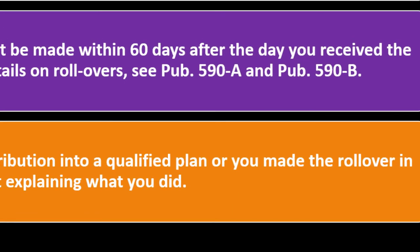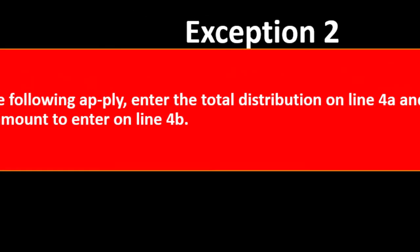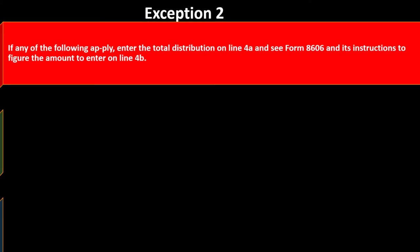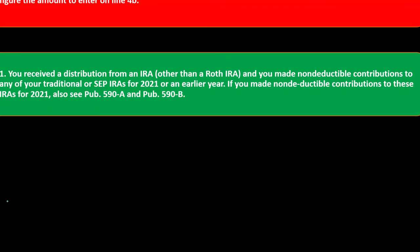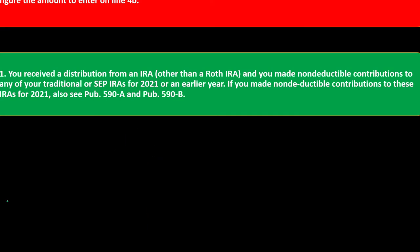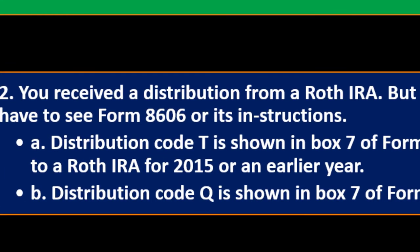You could have a cutoff situation where you pulled the money out in 2021 and put it back within 60 days, but the rollover wasn't completed until 2022. In 2021 you had the distribution but hadn't put it back in yet. Exception two: if any of the following apply, enter the total distribution on line 4A and complete Form 8606 and its instructions to figure the amount to enter on line 4B.